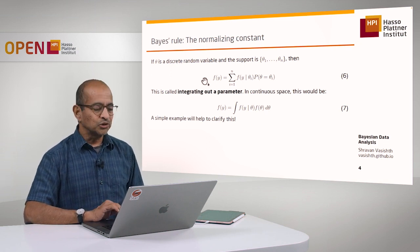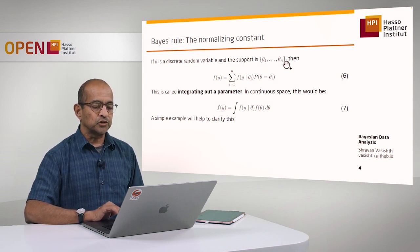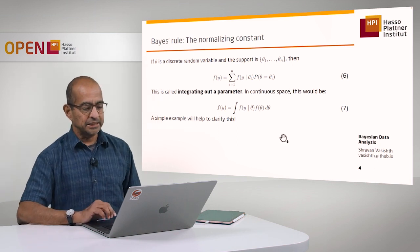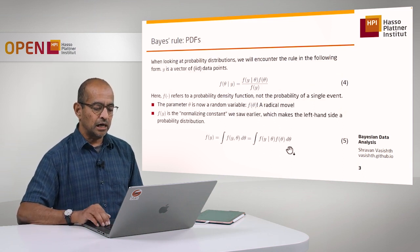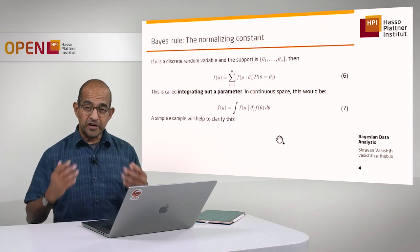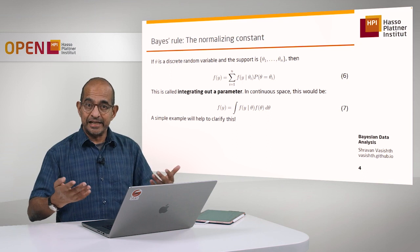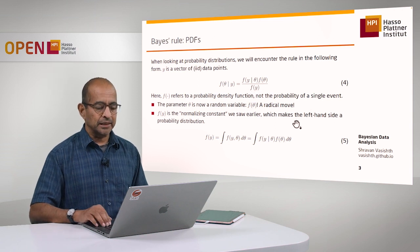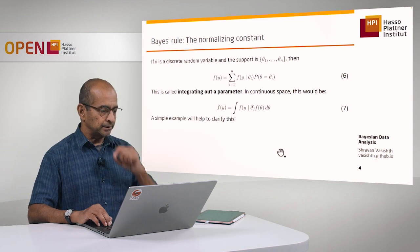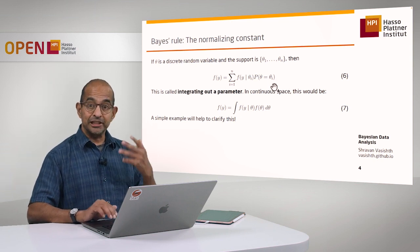So you could integrate out the theta parameter by multiplying the binomial probability mass function with each of those probabilities of each of those thetas. This process is what we are doing here, and this is called integrating out a parameter — you will hear this term very often in Bayesian analysis. It's a very obscure term and it's not really clear what it means, but I'm going to show you now exactly what integrating out a parameter means.